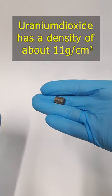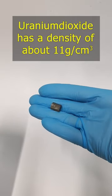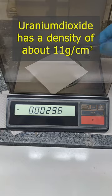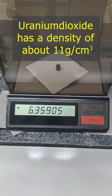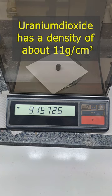It's always said that uranium is extremely dense. Uranium dioxide indeed has a relatively low density at around 11 grams per cubic centimeter, but I find it very impressive how little volume 9.75 grams of uranium dioxide occupies.